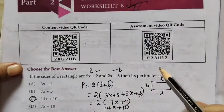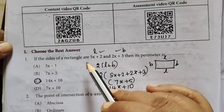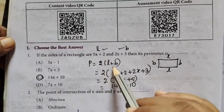8th Math Worksheet No. 8. Question 1: Choose the best answer. If the sides of a rectangle are 5x plus 2 and 2x plus 3, then its perimeter is...